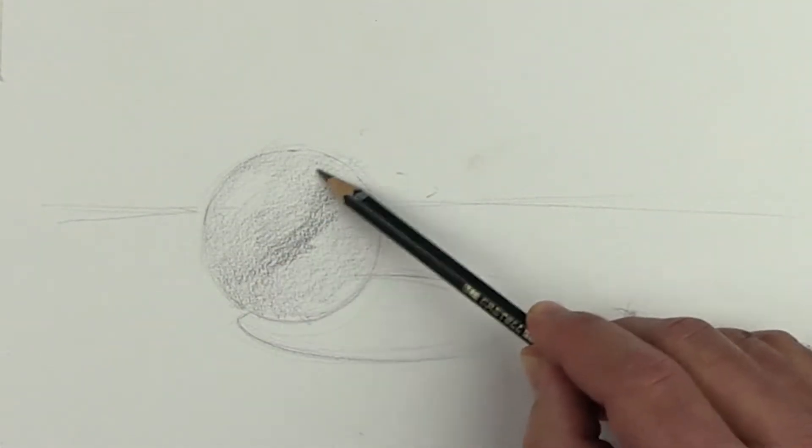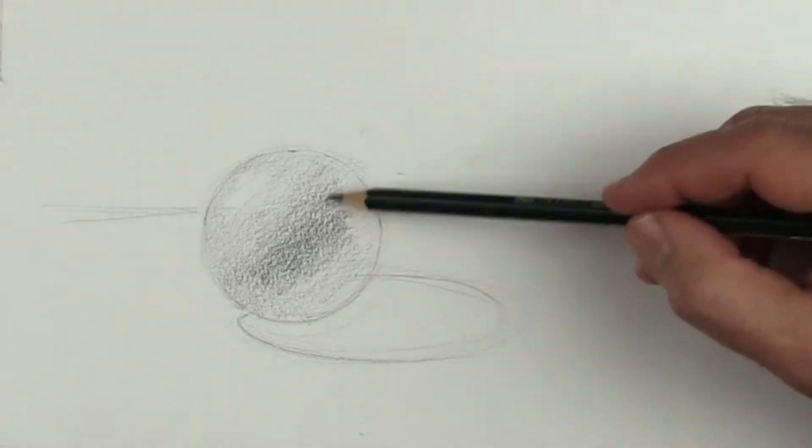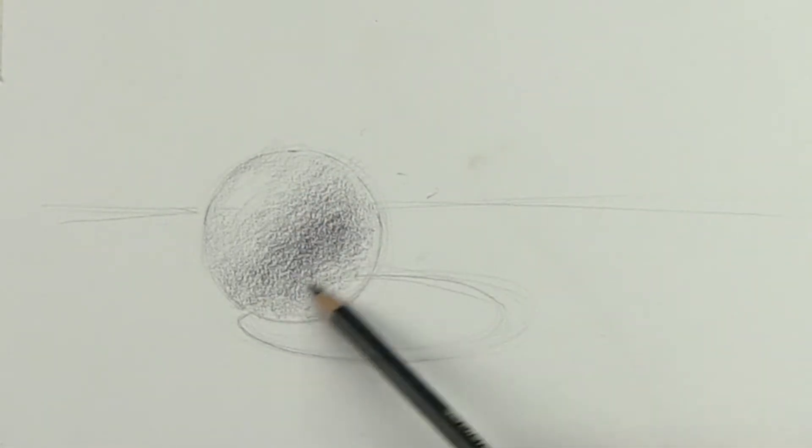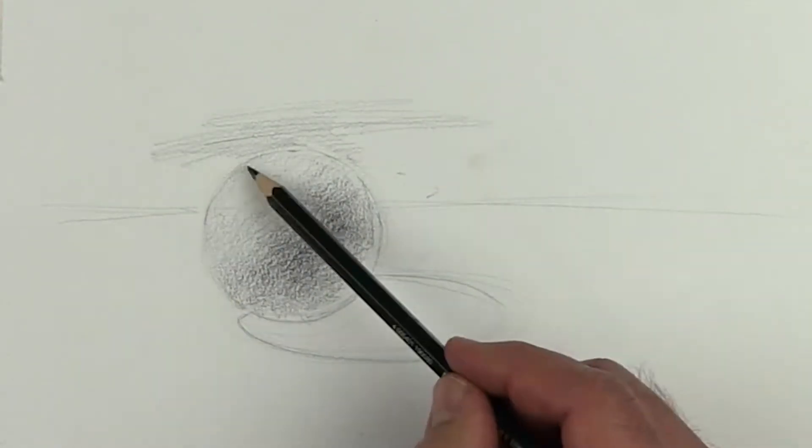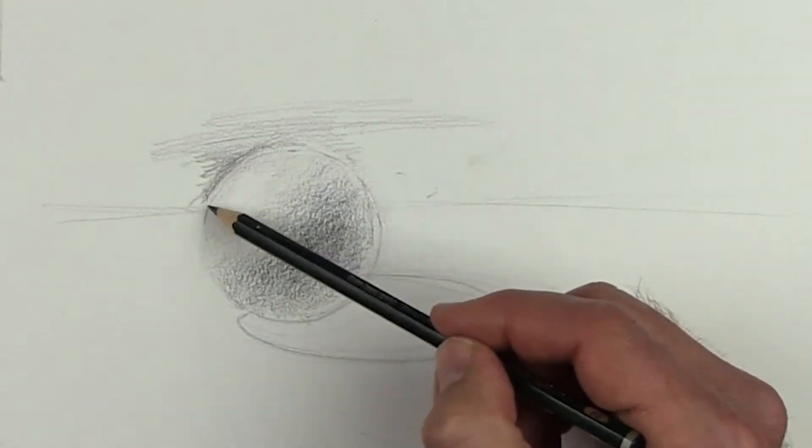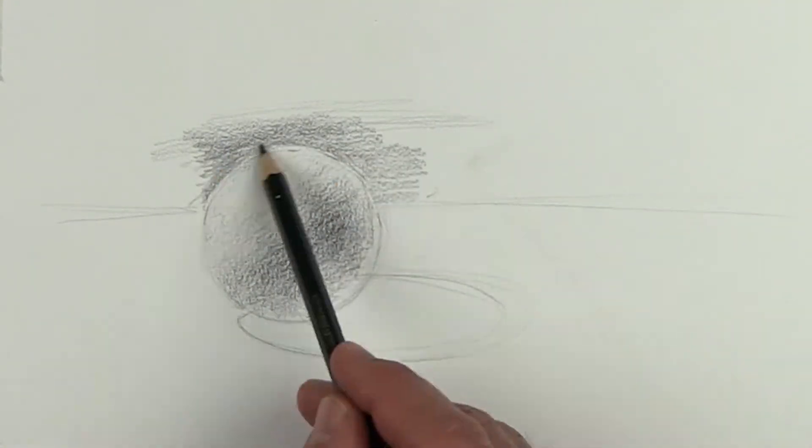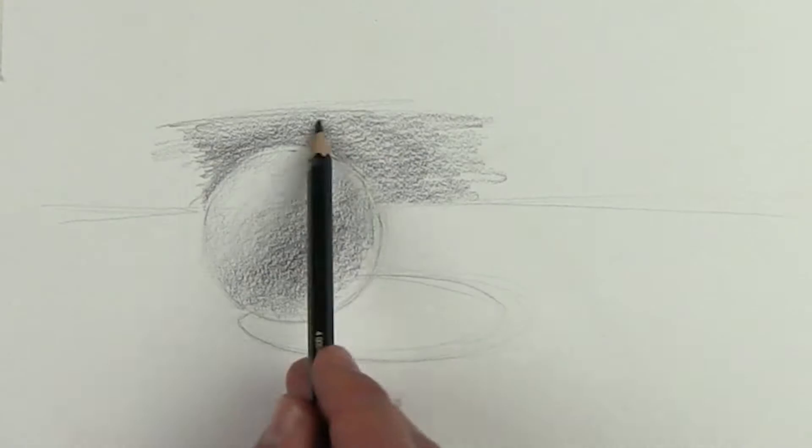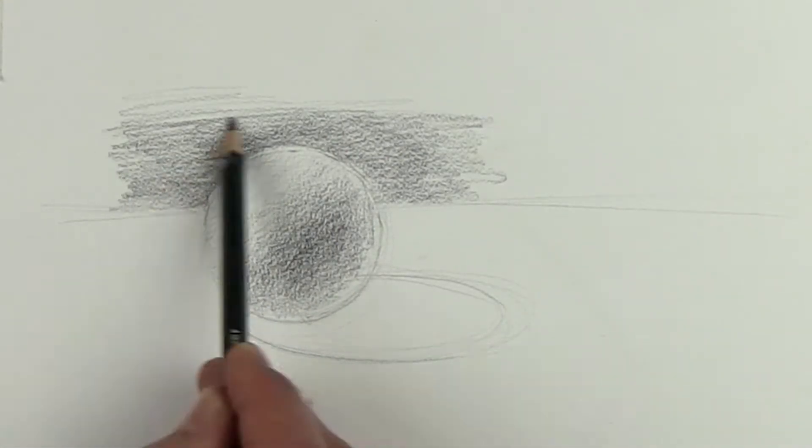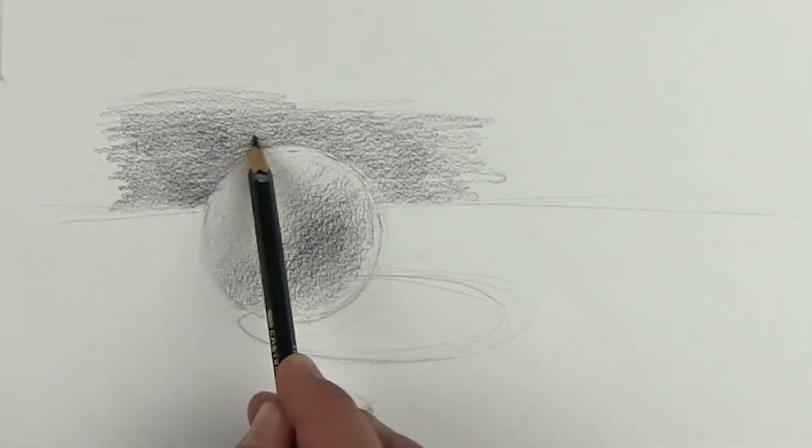I'm going to show you how the background helps make the light area of the sphere pop out.